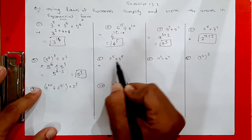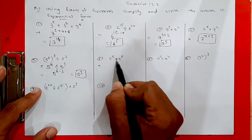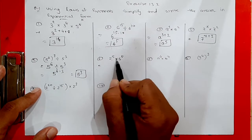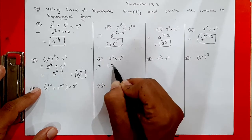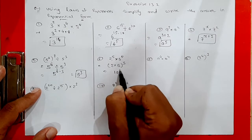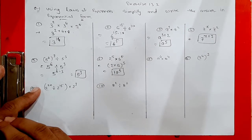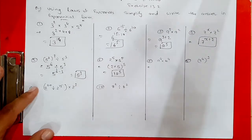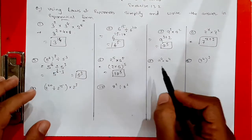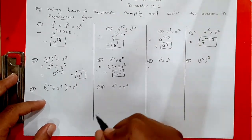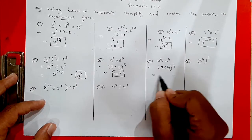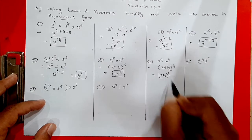Sixth question: 2 raised to 5 multiplied by 5 raised to 5. Bases are different but powers are the same, so multiply the bases and write the common power: 2 times 5 is 10, answer is 10 raised to 5. Seventh question: a raised to 4 multiplied by b raised to 4 — different bases, same power — answer is (ab) raised to 4.